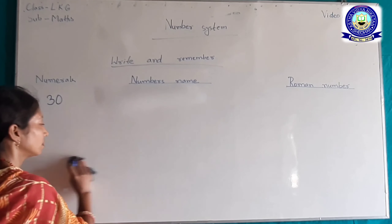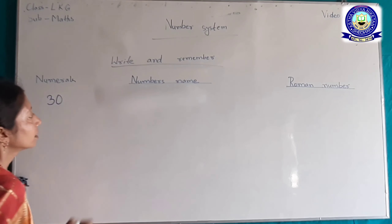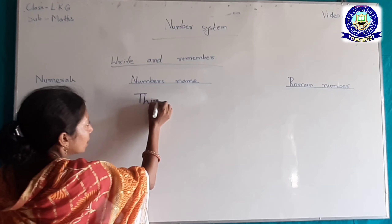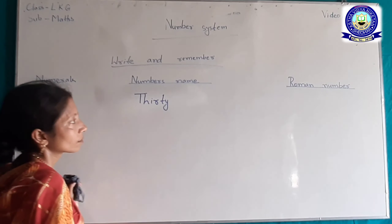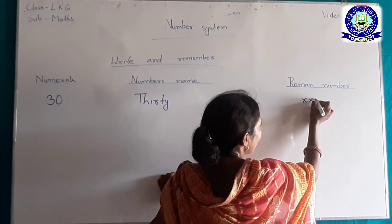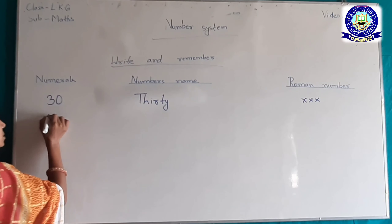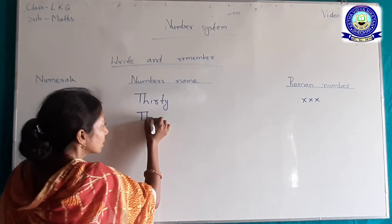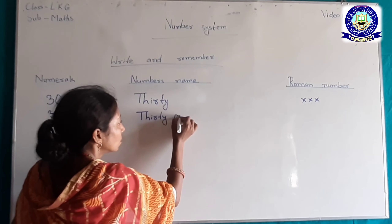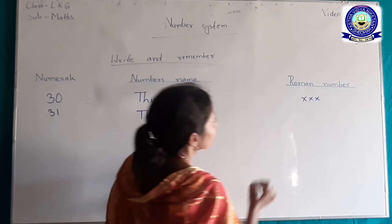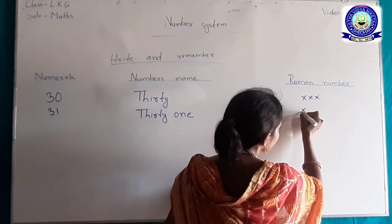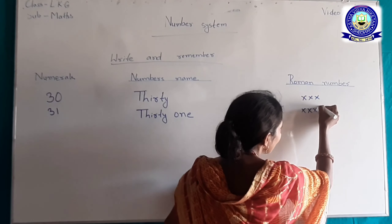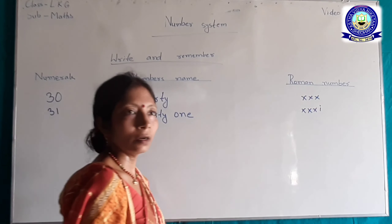30 से start करते हैं। 30 का word में लिखते हैं: T-H-I-R-T-Y। 30 का Roman number: XXX (Triple X)। 31 का word में लिखेंगे: T-H-I-R-T-Y-O-N-E। 31 का Roman number: Triple X plus I, मतलब XXXI।